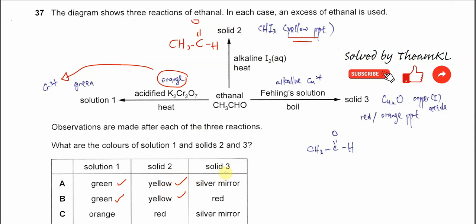For solid 3, ethanal reacts with Fehling's solution. Fehling's solution is alkaline copper(II). The copper(II) will oxidize the ethanal and itself gets reduced to copper(I). So it will form copper(I) oxide, which is a red or orange precipitate.